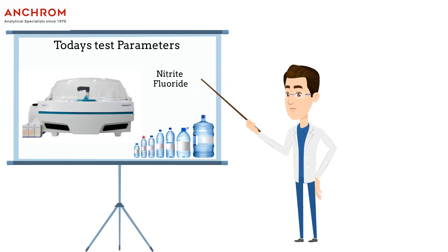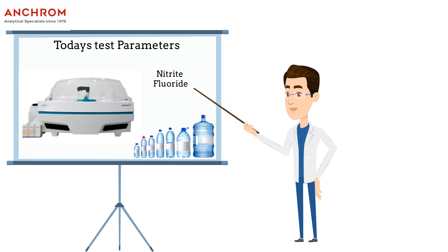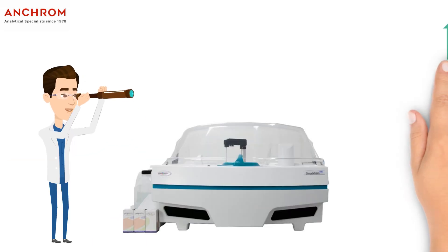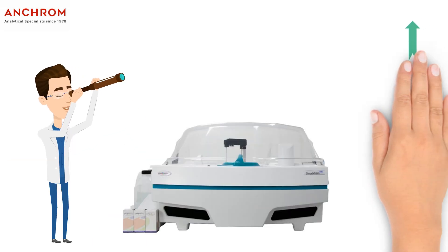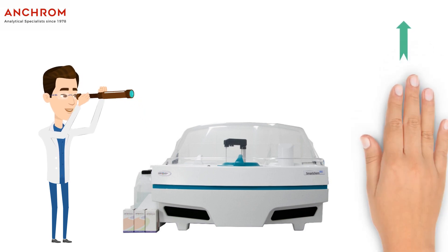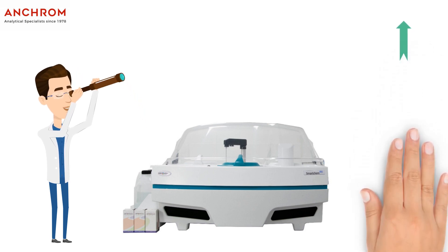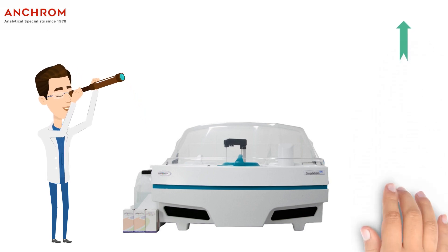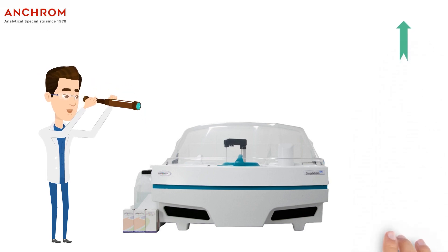Now let us get into more detail about how SmartCom can ease your daily analysis using one example. Here, we are going to take fluoride and nitrite in packaged drinking water as an example. Before starting with our analysis, if you wish to have an overview of the SmartCom 450 instrument, please feel free to click on the link in the i button above.